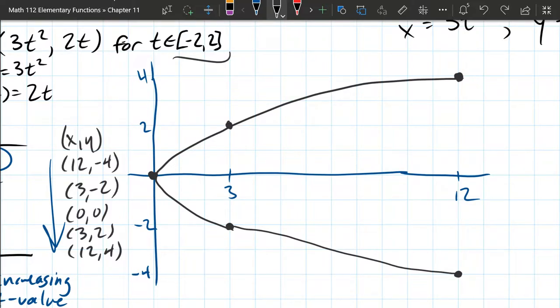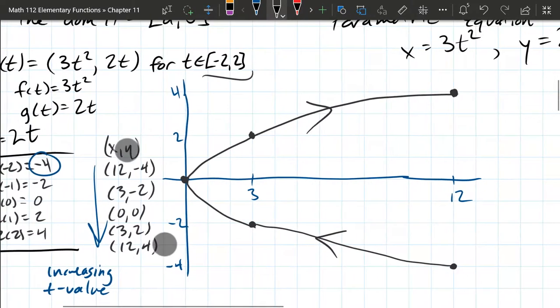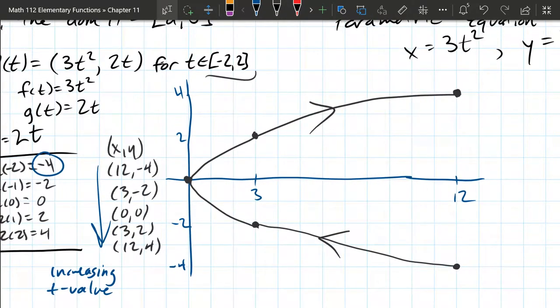There's one more thing we have to do, which is orient the line and give it an orientation. You're going to draw these arrows on, so these are increasing t values. And that's all there is to graph.